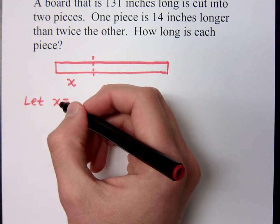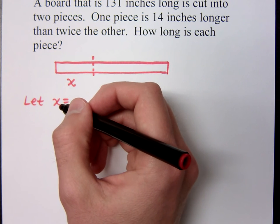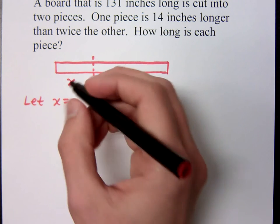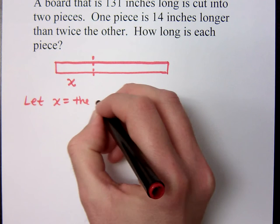No, x is not the short piece. It's not the actual physical construction of the short piece. What is it about the short piece that x is representing? We don't know how much longer it is. The length of it, right? So x is the length of the short piece.